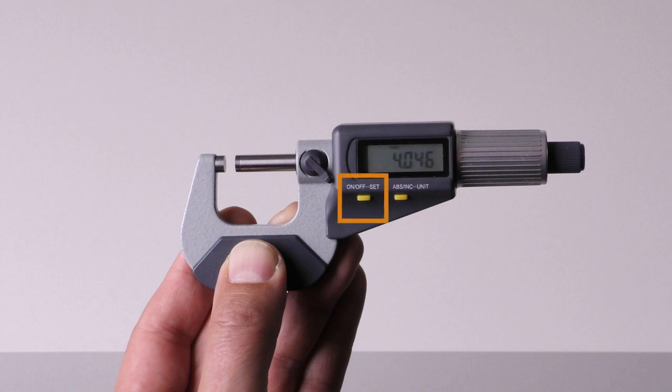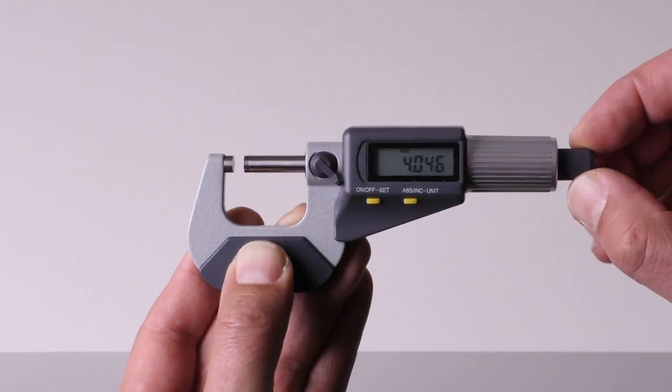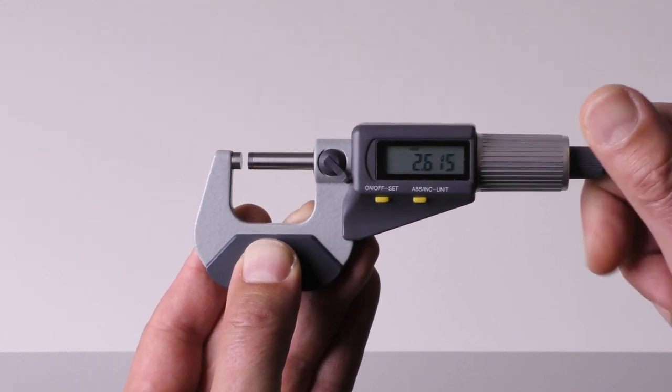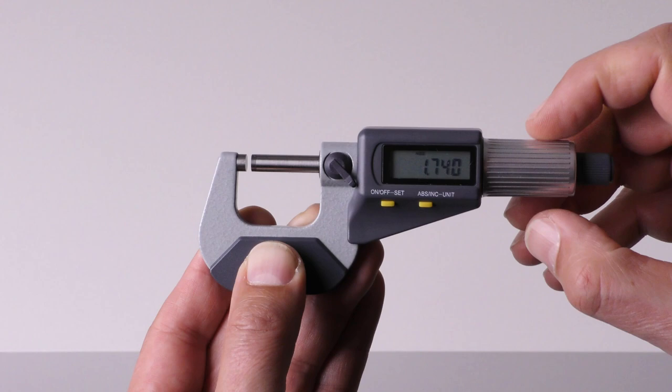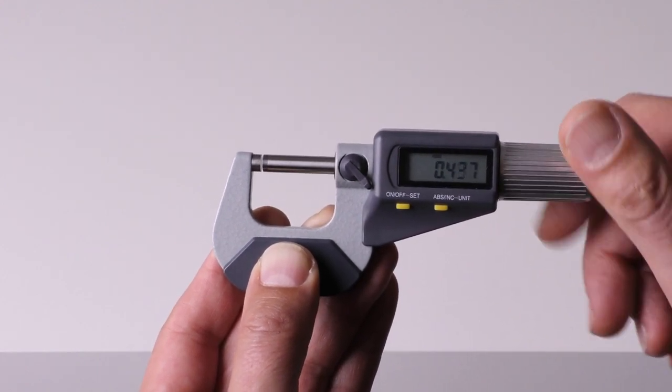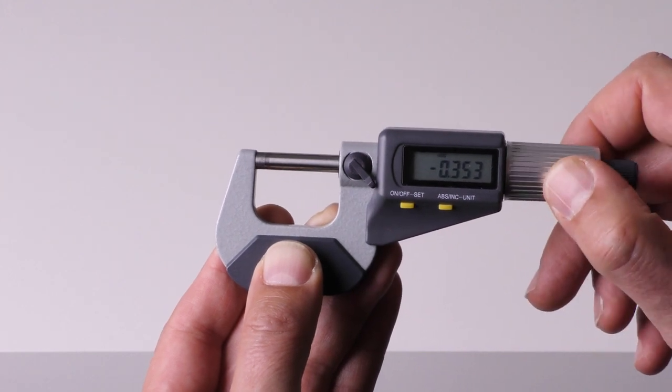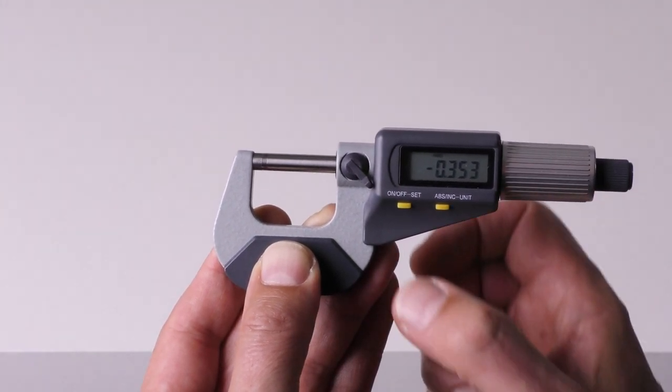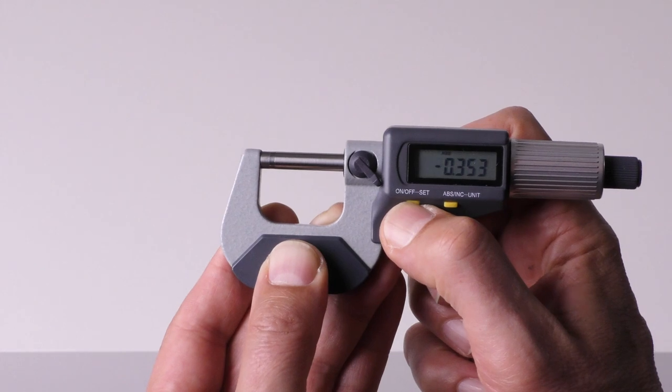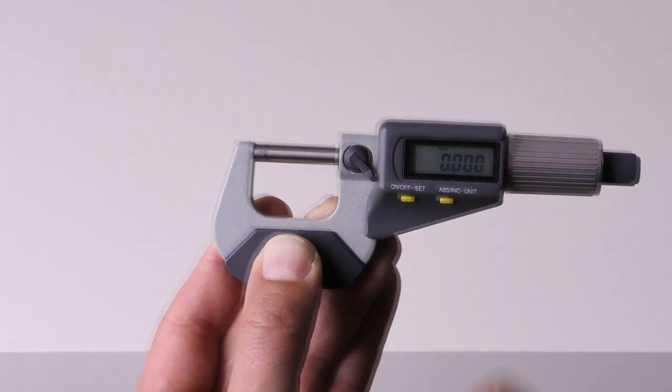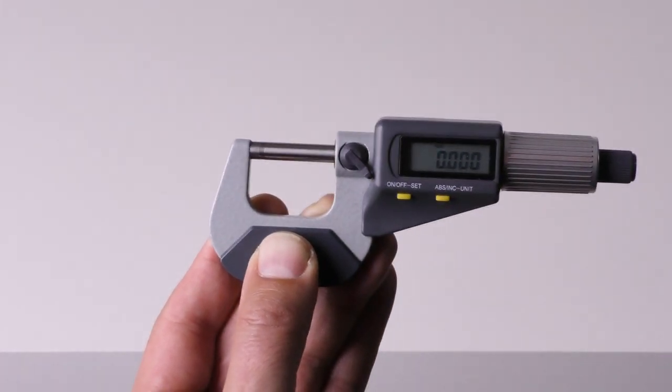Switch on the micrometer by pressing the on-offset button. Adjust the measuring surfaces to a distance of approximately two millimeters with the quick drive. Then slowly turn the ratchet until the measuring surfaces touch each other and the torque mechanism was triggered. Now press and hold the on-offset button for three seconds. The value 0.000 on the display indicates that the zero point is set. The micrometer is now ready for measuring.